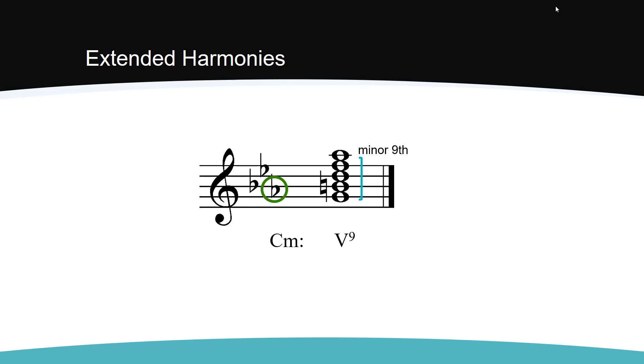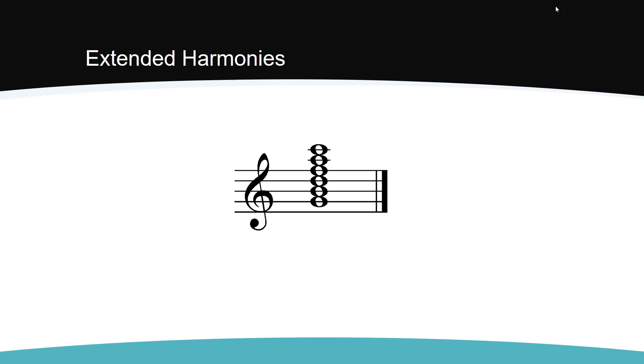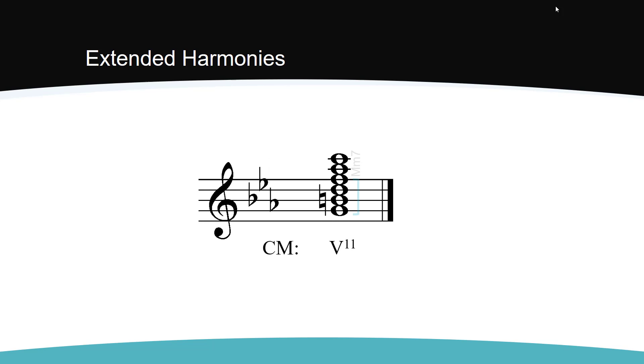To make the 11th chord, we add another third. In major, we create a major-minor 7th chord with a major 9th and a compound perfect 4th above that. The Roman numeral for a V11 chord is written like this. In minor, we create the same major-minor 7th chord, but now with a minor 9th above. The 11th above the root is the same as in major, though, a compound perfect 4th. In minor, we write the Roman numeral the same as in major.